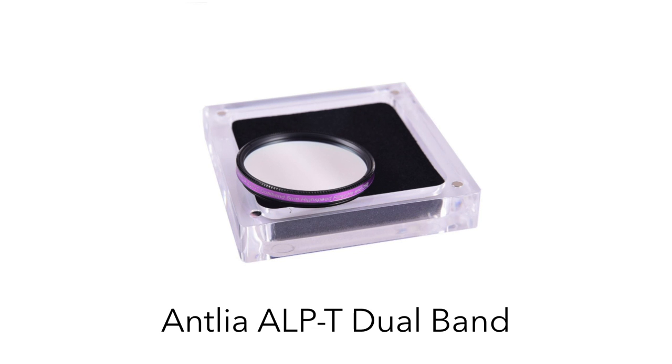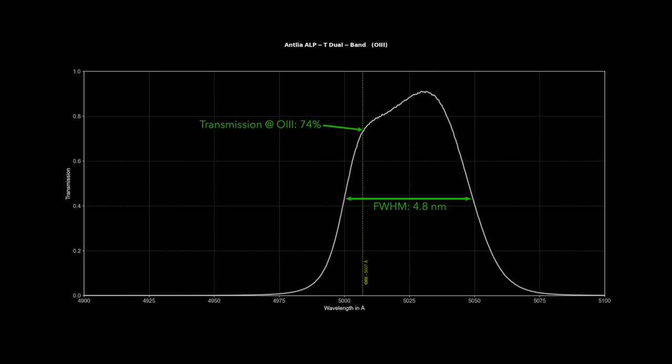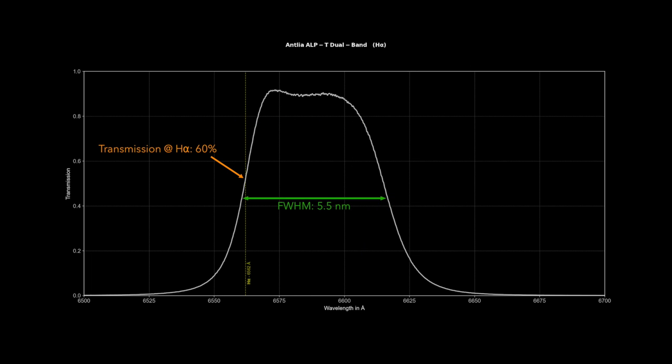Our final victim is Antlia's ALPT dual band, so-called golden filter, because it looks golden yellow when you look at it in daylight, and some people have joked that it is more expensive by weight than gold. Anyway, Antlia advertises a 5 nm bandpass in both H-Alpha and O3, and a peak transmission of 82% for O3 and 90% for H-Alpha. My measurements confirmed the 5 nm bandwidth, but the transmission numbers were slightly off, with 74% for O3 and a disappointing 60% for H-Alpha. This looks like a pre-shifted filter, which would likely do very well with a very low focal ratio, like F3 for example.